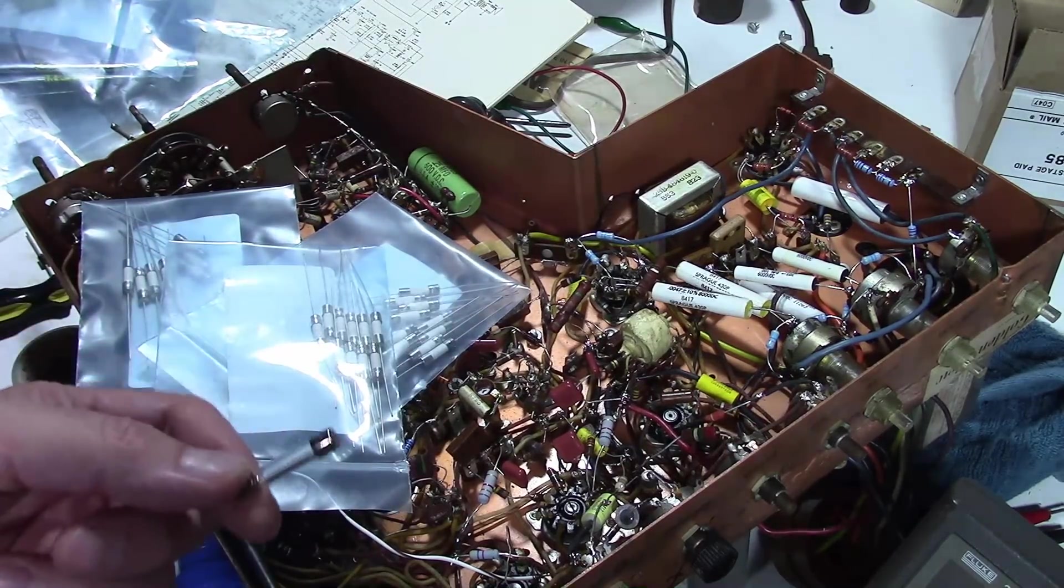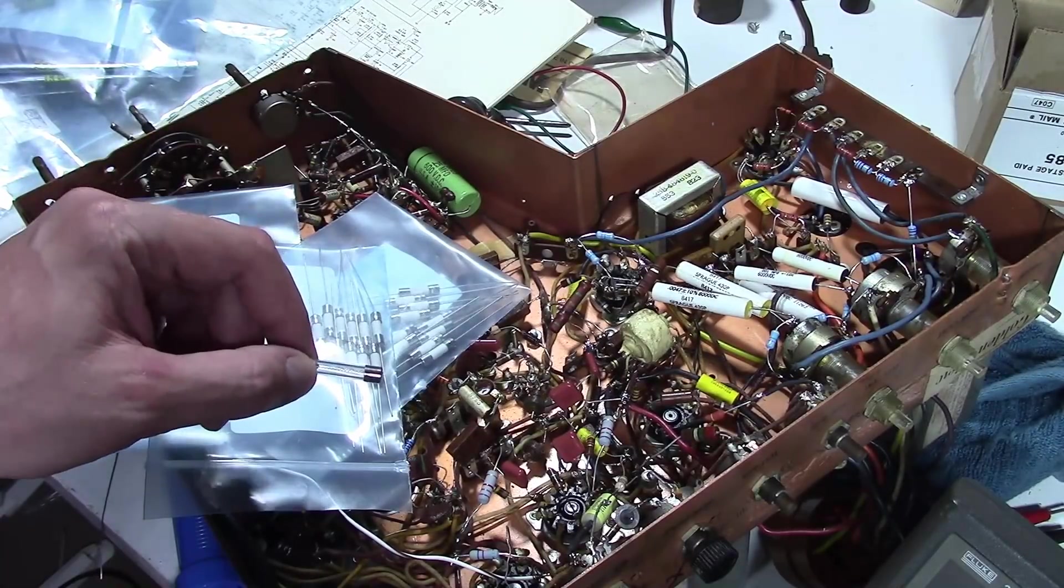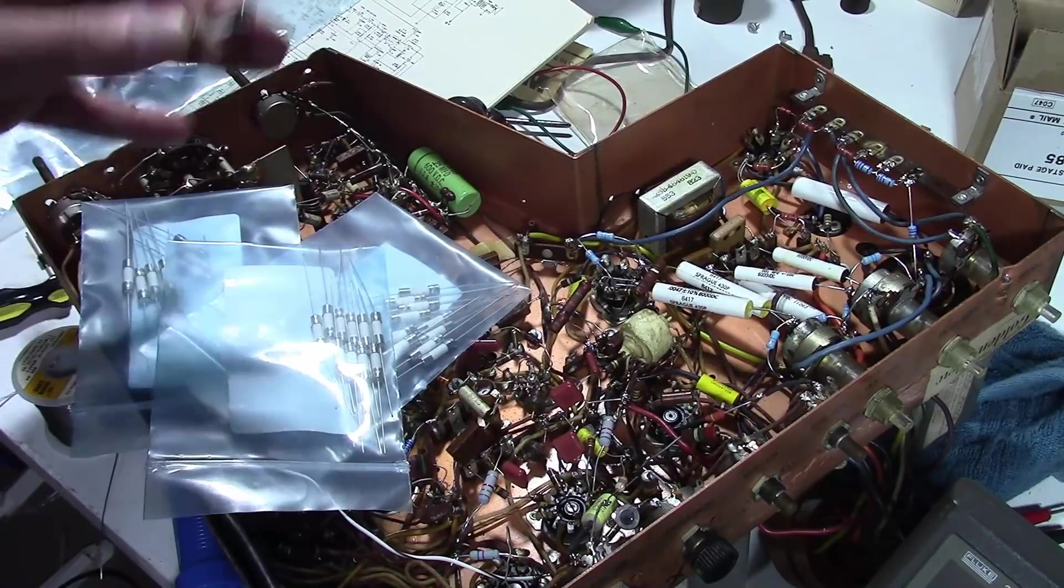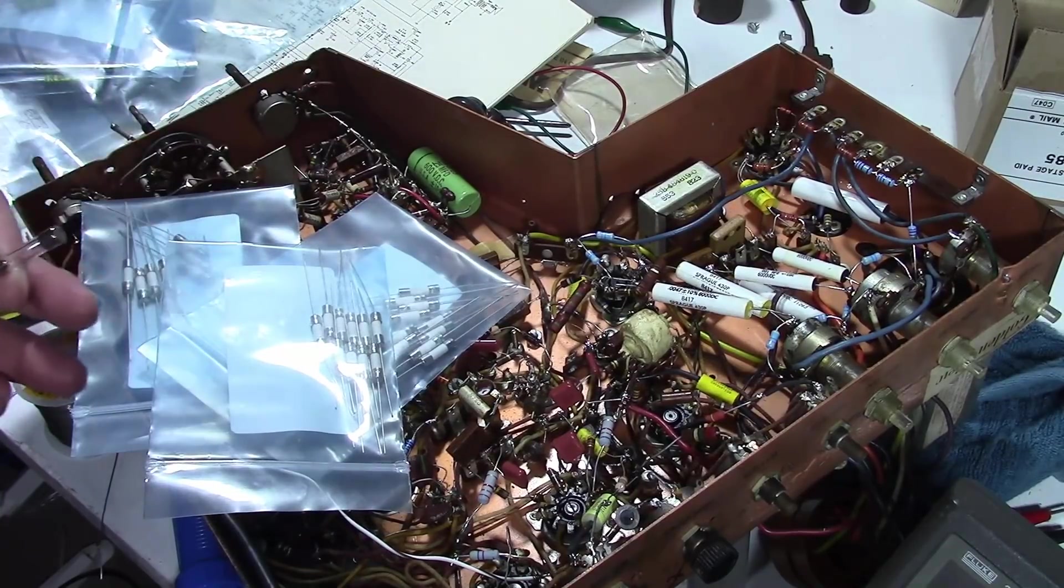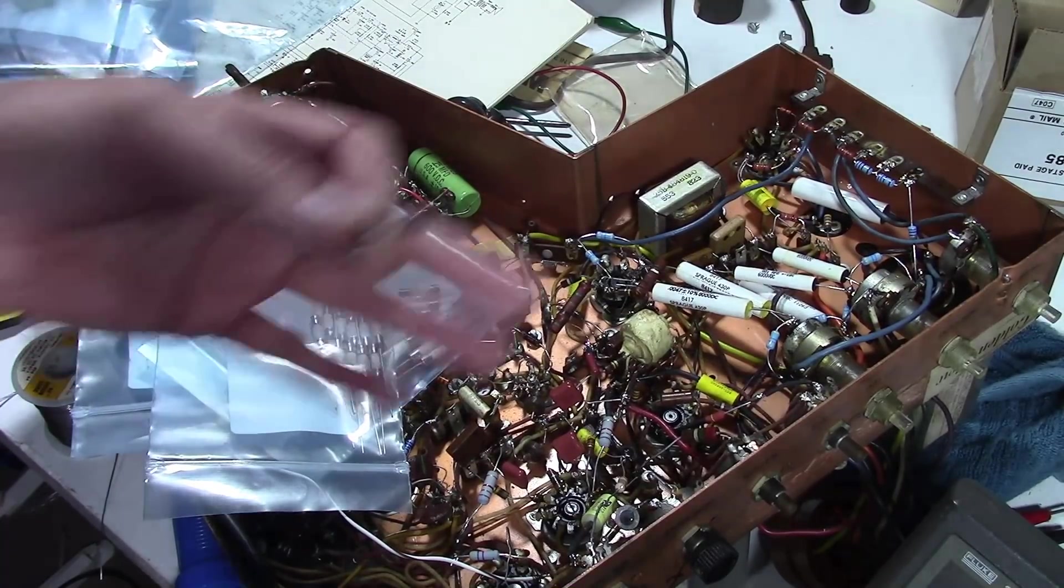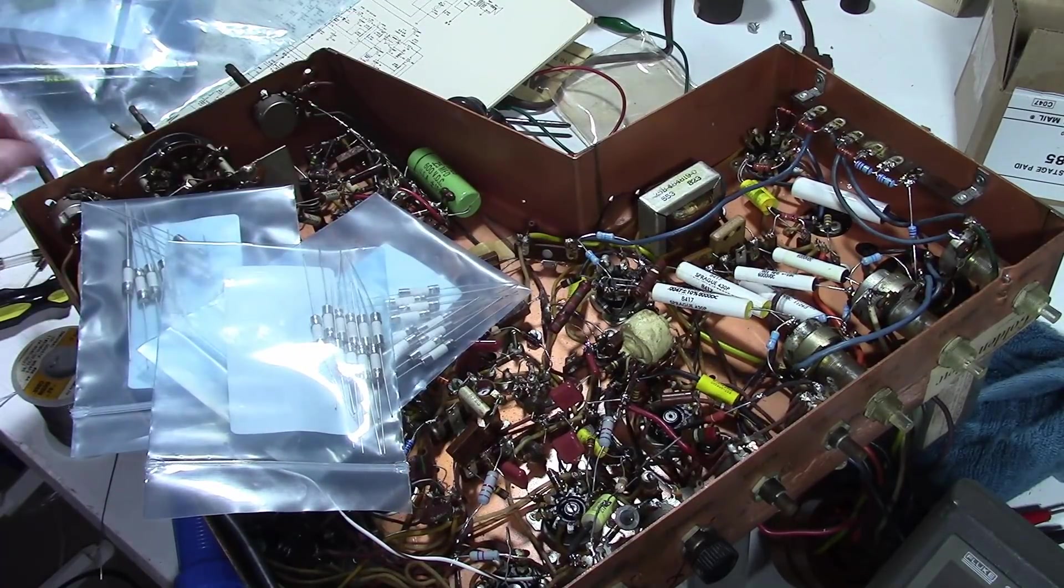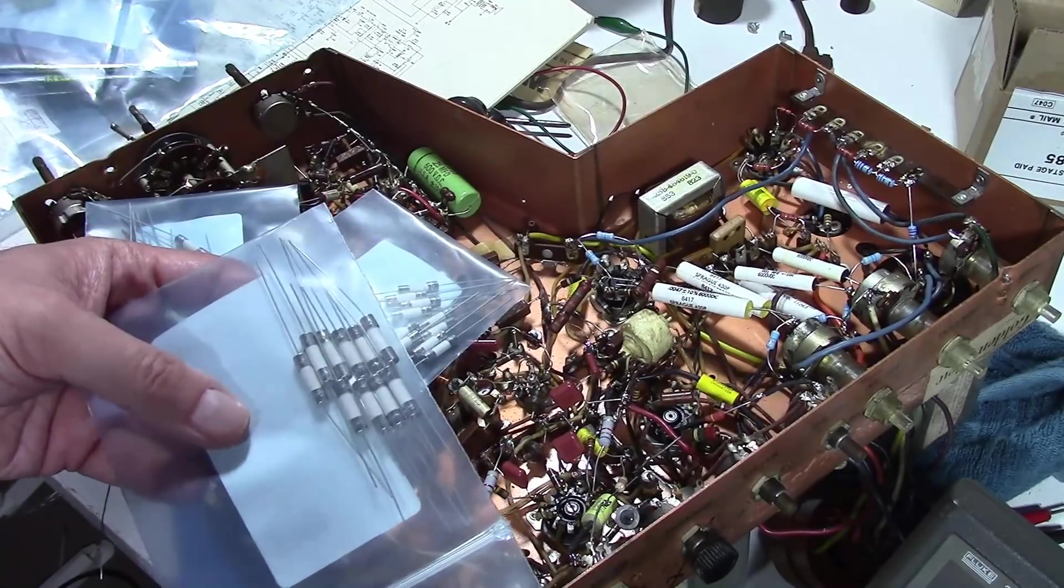Something else to keep in mind is that when you turn these sets on, especially when they're stone cold, there's a surge current as the caps charge up, and all the filaments when they're cold have a lower resistance. So you get a surge current with the tube filaments and that's where the slow blow comes in.